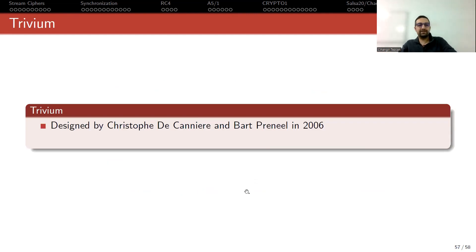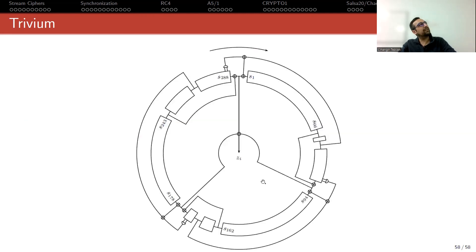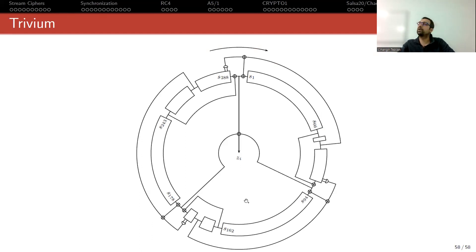The second standard is Trivium, designed by De Caneer and Bartonel in 2006. This is a stream cipher construction inspired by block cipher design principles, and it has a very nice structure. It has a huge internal state — as you can see, it starts with S1 and goes to S288. In each step it is like you are rotating this structure, performing these operations and producing the keystream. Unfortunately, it supports only 80-bit keys.